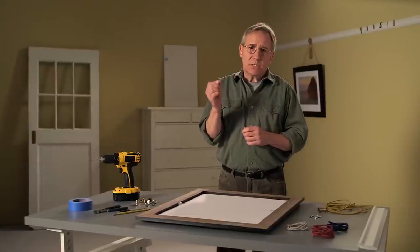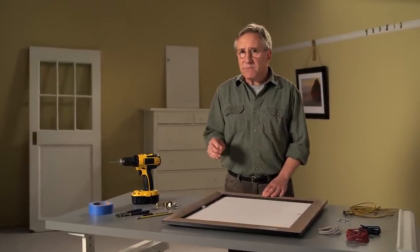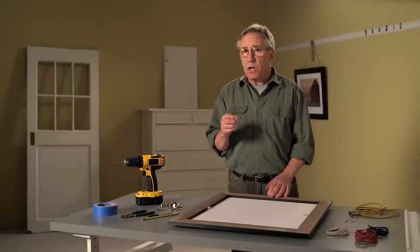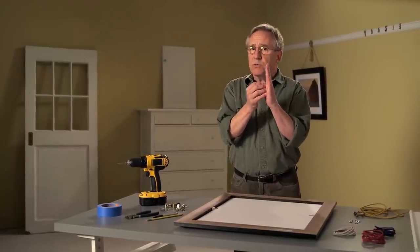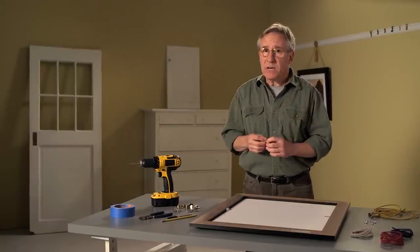The first step is to install the eyelet screws in the back of the picture frame. The higher you install the screws on the frame, the flatter it will hang to the wall. The lower you install the screws, the more the picture will tip forward. That could be good if you have a very high installation.